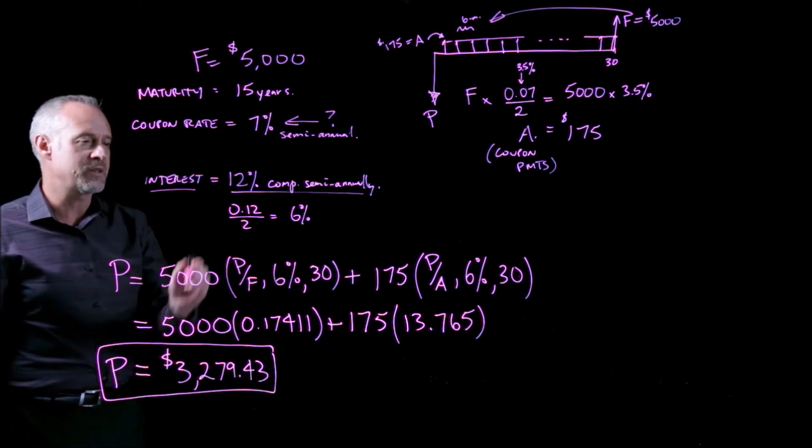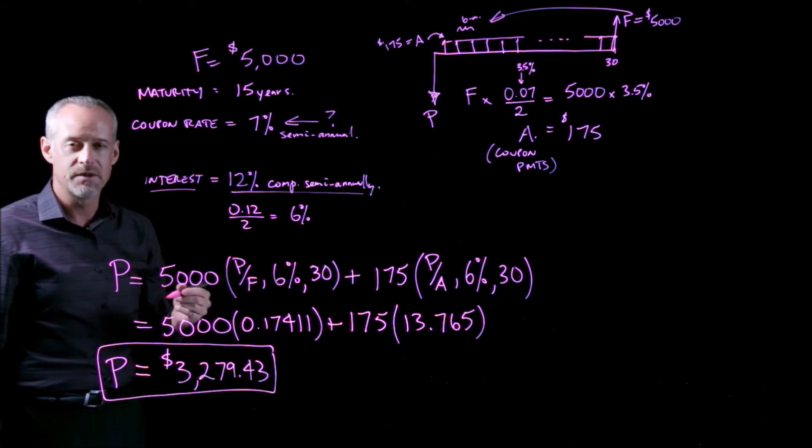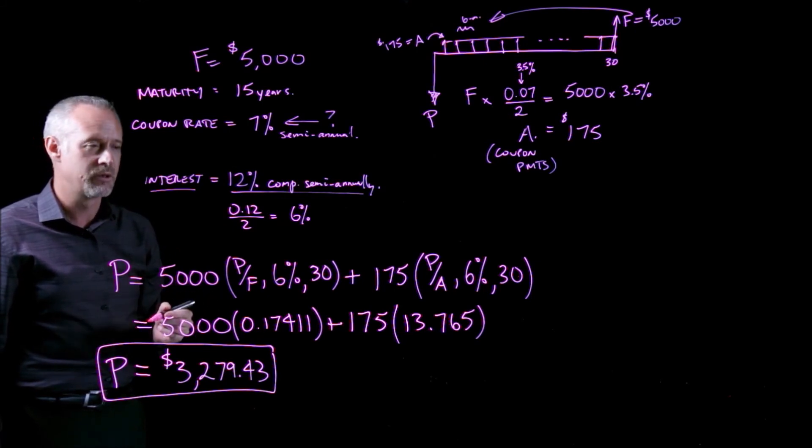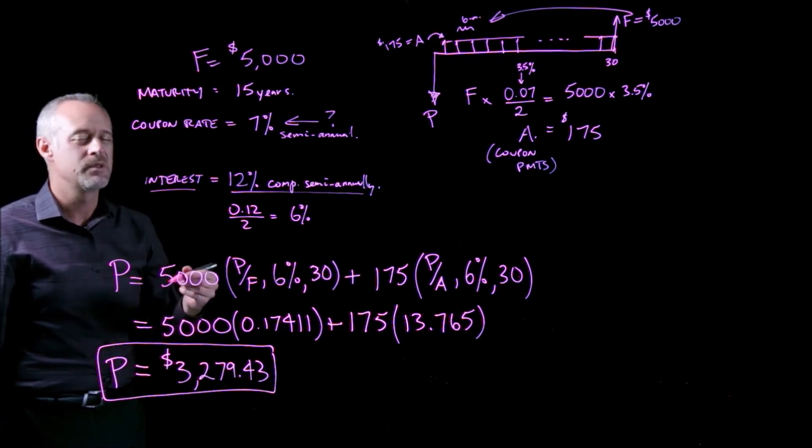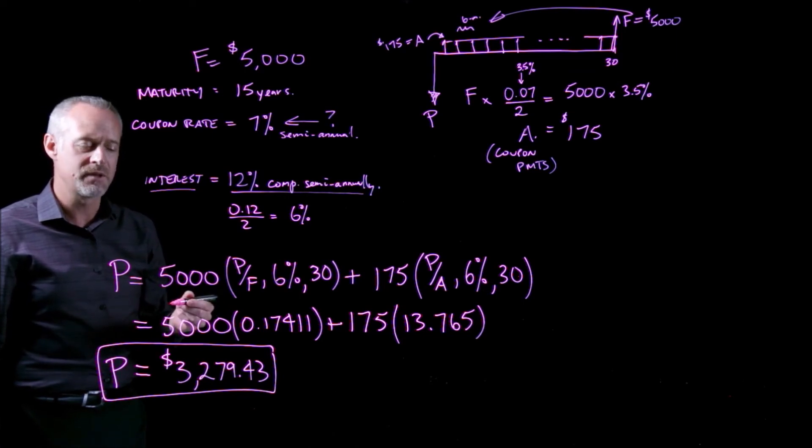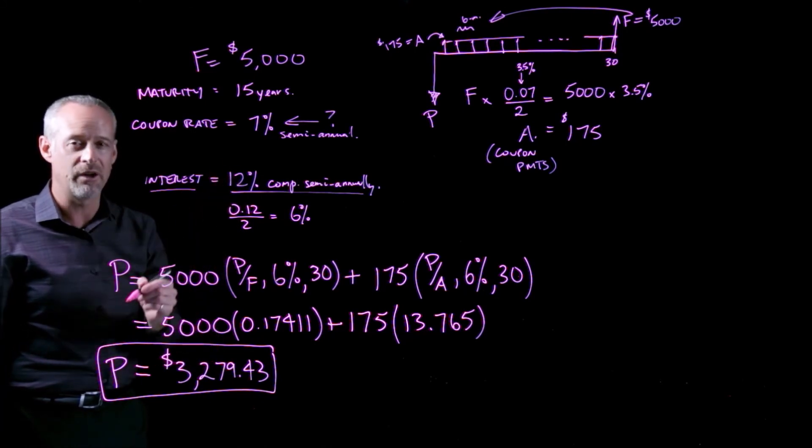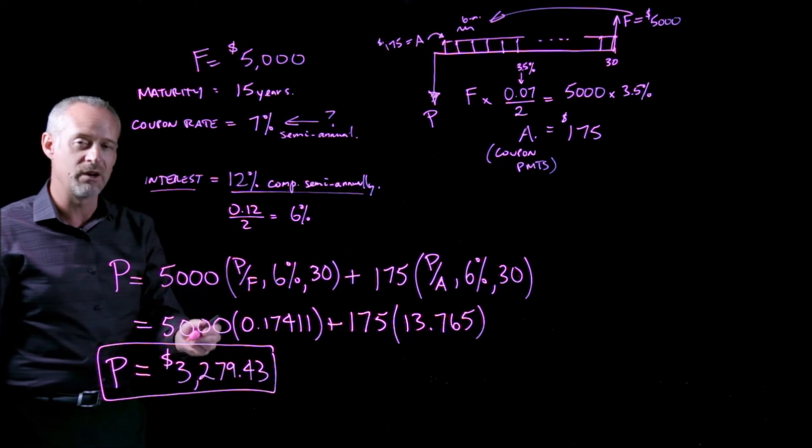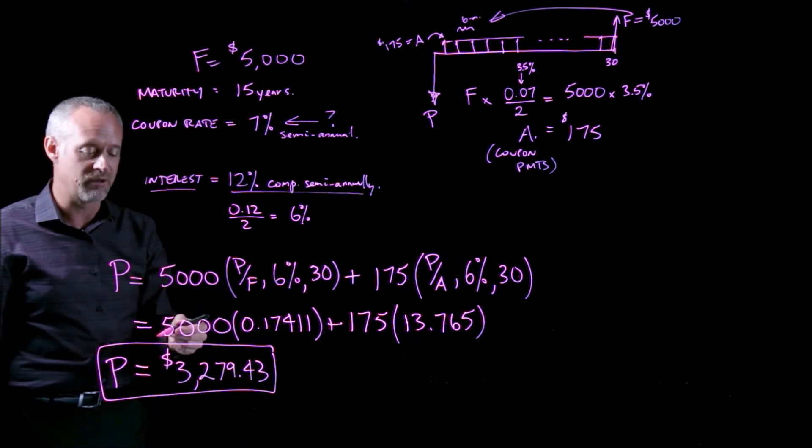Well, remember, we're expecting an interest rate of 12% on similar risk investments. This investment is really only paying us 7% compounded semi-annually as its return. What that means is that I should be willing to pay less than the face value of the bond because the rate of return on the coupon rate is less than the rate of return I expect for similar risk investments.